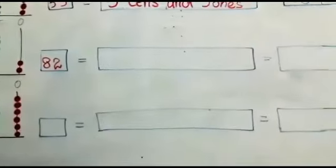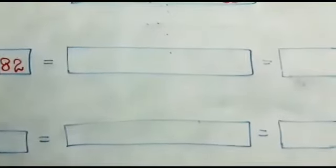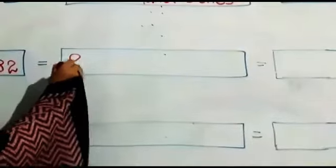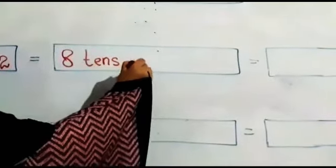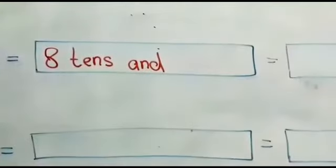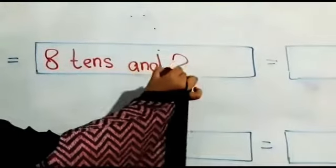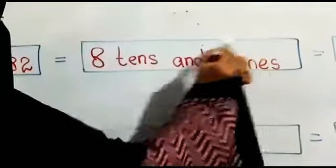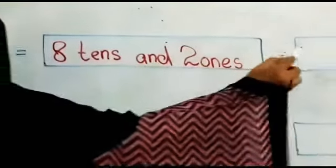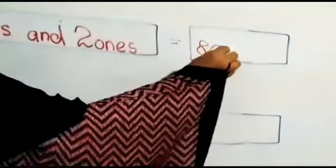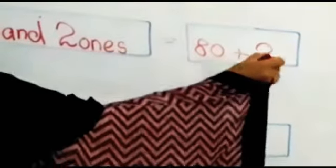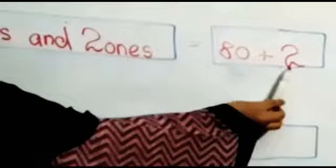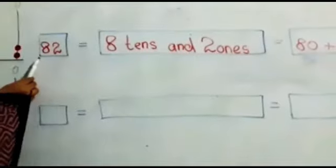So we will write 8 tens and 2 ones. 8 tens is 80 plus 2 ones is 2. So 80 plus 2 becomes 82.